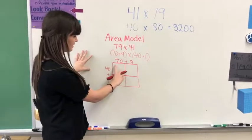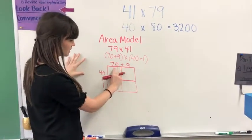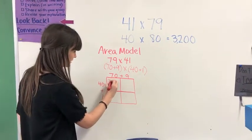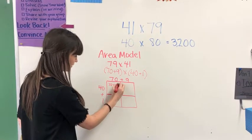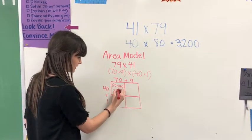So here we can see this box represents potentially 70 going across and 40 going down. The area of this box will be 70 times 40. 70 times 40 is going to be 2,800.